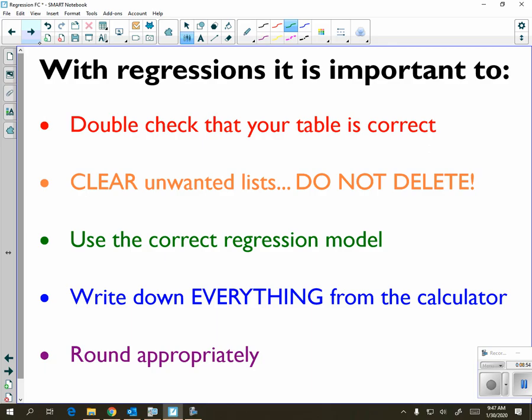So some things to keep in mind with regressions: make sure that you double-check that your table is correct. We are clearing unwanted lists, we are not deleting them. Use the correct regression model. If the problem says to use an exponential regression, make sure you choose that. Write down everything from your calculator because that's your partial credit. And in the end, you have to make sure you round appropriately. Usually, creating regression questions are only worth two points on the regents. If you mess up any of these five important parts, you're not going to get the full two points.